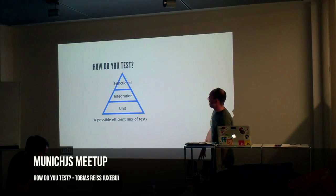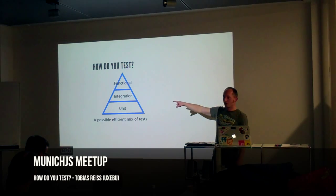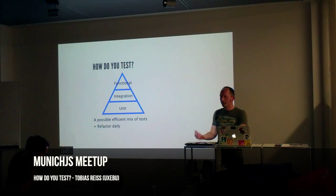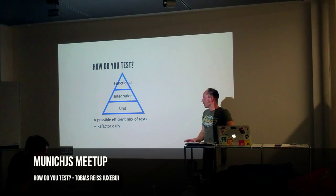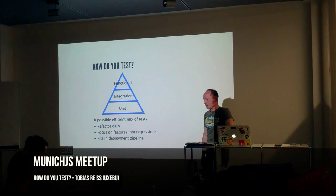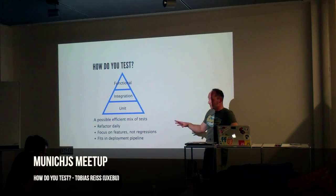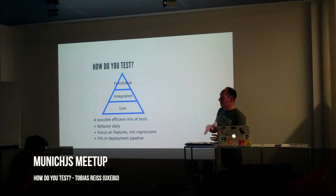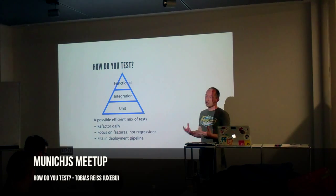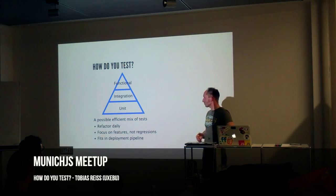So that's one possible efficient mix of tests. I choose unit tests for the developer, for the daily workflow — they run very fast. You can always be sure that everything is fine. You can focus on features, not regressions. And that test strategy fits perfectly into any deployment pipeline. Consider unit tests to be executed all the time, integration tests — if automated — maybe executed whenever you merge something into your main repository, and functional tests executed before you deploy.